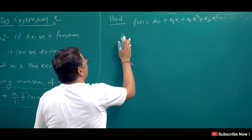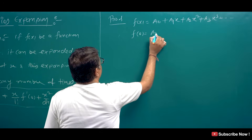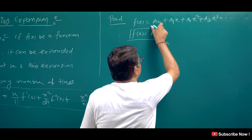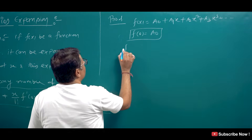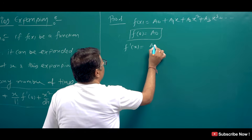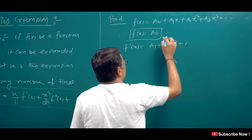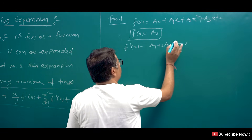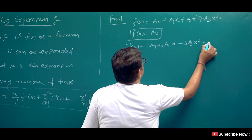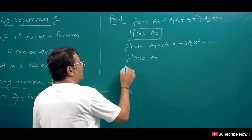First, at x = 0: f(0) = a₀. So a₀ = f(0). Now differentiate: f'(x) = a₁ + 2a₂x + 3a₃x² + ... At x = 0: f'(0) = a₁.